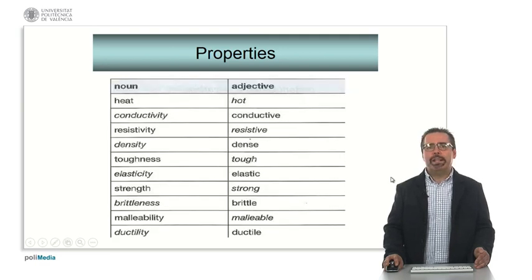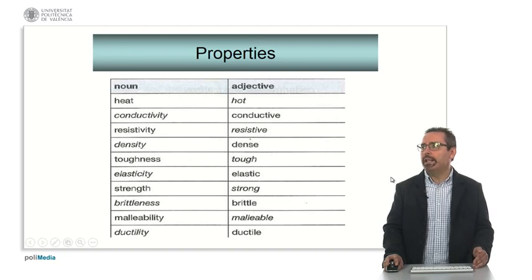Normally, very often properties are given in the form of a noun or an adjective. Here we have a list of the most typical ones in engineering. Heat, hot. Conductivity, and the adjective, conductive. Resistivity, resistive. Density, dense. Toughness, tough. Elasticity, elastic. Strength, strong. Brittleness, brittle. Malleability, malleable. Ductility, ductile. Mind the pronunciation, too.